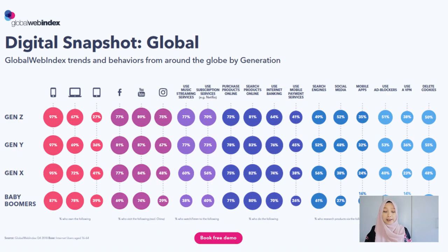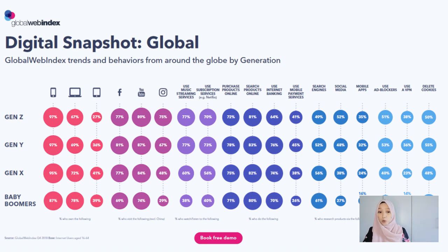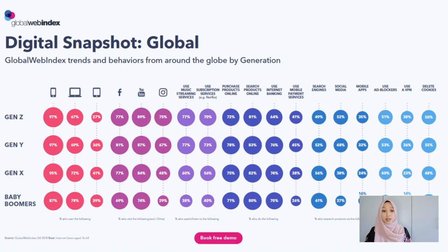If you see closely here, most of the generation cohorts such as Generation Z — which is you guys — Generation Y, Generation X, and Baby Boomers, most of them are using Facebook and YouTube. However, on Instagram, more than 50% of Generation Z and Generation Y are using Instagram. So most different social media channels have different audiences.